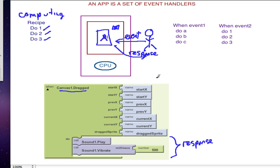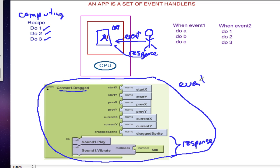And we call this whole thing an event handler. It's got some event, like click a button or drag the mouse or drag your finger. And it's got some response, which is some operations that do something on the phone. In this case, play a sound and vibrate the phone.